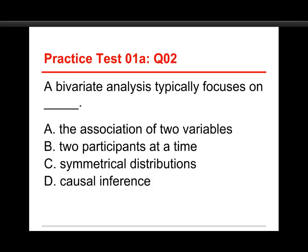Question number two: a bivariate analysis typically focuses on blank. The choices are the association of two variables, two participants at a time, symmetrical distributions, or causal inference. The answer to this one is A, the association of two variables.